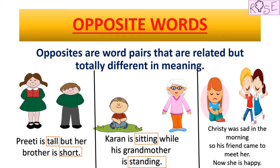Last sentence: Christy was sad in the morning, so her friend came to meet her. Now she is happy. There are two words in these sentences which indicate the mood of Christy — sad and happy. Both are related to mood but totally different. Being sad and being happy are two totally different things; their meanings are opposing each other. Therefore, they are a set of opposite words. Sad — and what is the opposite of sad? Happy.